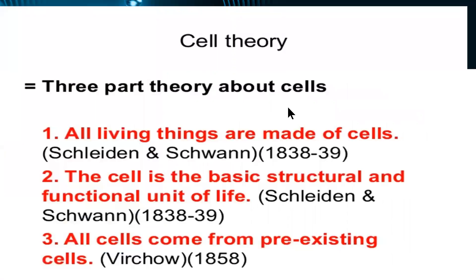The classical cell theory consists of three parts. Number one: all living things are made up of cells — this point was established by Schleiden and Schwann in 1838–39. Number two, also by the same scientists: the cell is the basic structural and functional unit of life. The third point, concluded by Virchow in 1858, is that all cells come from pre-existing cells.